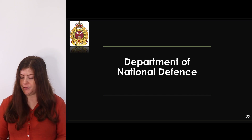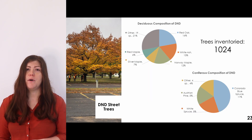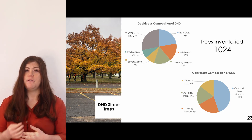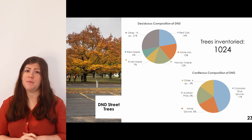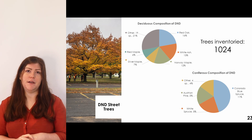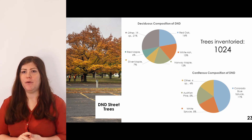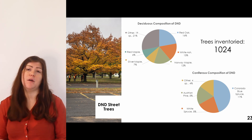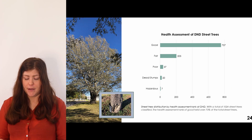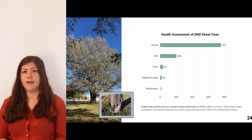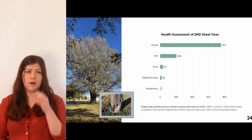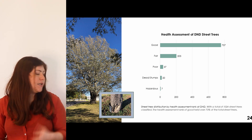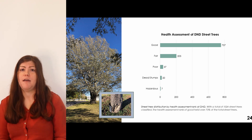Moving on to DND: a total of 1,024 street trees were inventoried on site, with roughly 25% conifers and 75% deciduous. A total of 36 species were identified, with the four most prevalent being red oak, white ash, Norway maple, and blue spruce, together accounting for 51% of the total inventory. The overall health was good, with 75% of trees in good condition. The most common issue was mechanical damage, usually from mowing, occurring on every one in five trees.